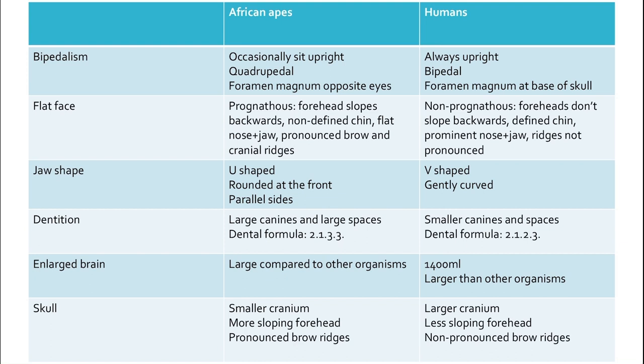For brain size: African apes have a large brain compared to other organisms, while humans have an even larger brain — approximately 1,400 millilitres. For the skull, this encompasses the flat face, jaw shape, and dentition already mentioned. African apes have a smaller cranium, pronounced brow ridges, and a more sloping forehead, while humans have a larger cranium, less sloping forehead, and non-pronounced brow ridges.